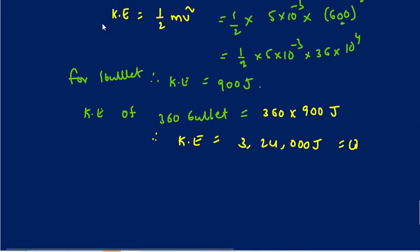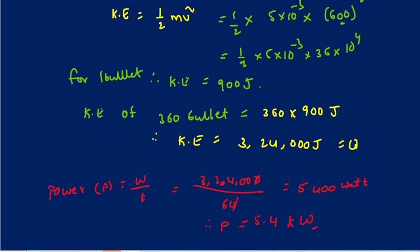This is equivalent to the work done by the gun. So power p equals work done divided by time, which is 324,000 divided by 60 seconds. Simplifying, we get 5,400 watts. This is the answer. Thank you, 5.4 kilowatts.